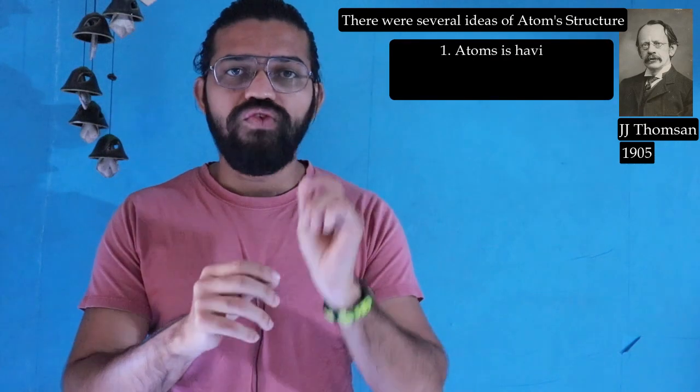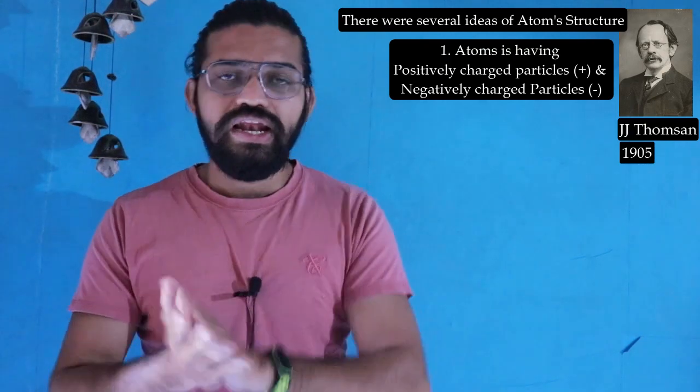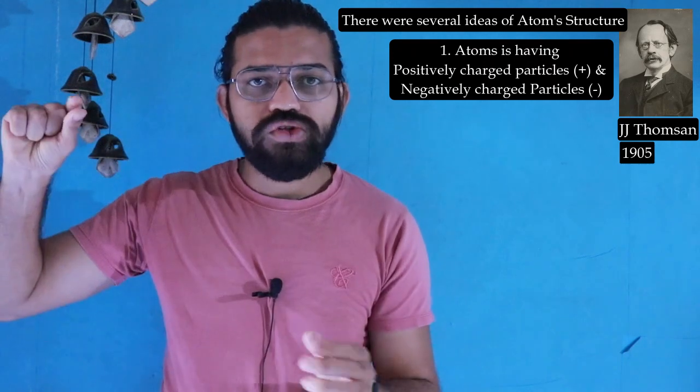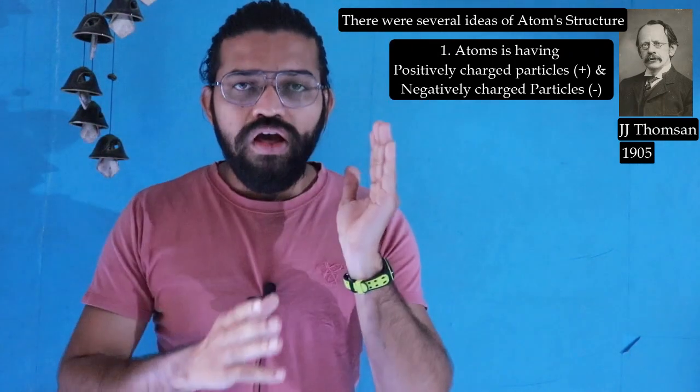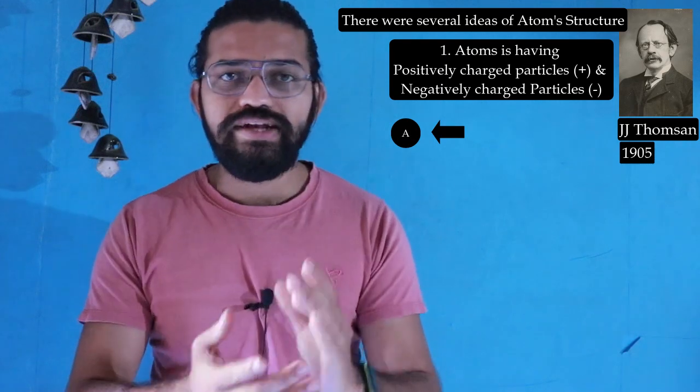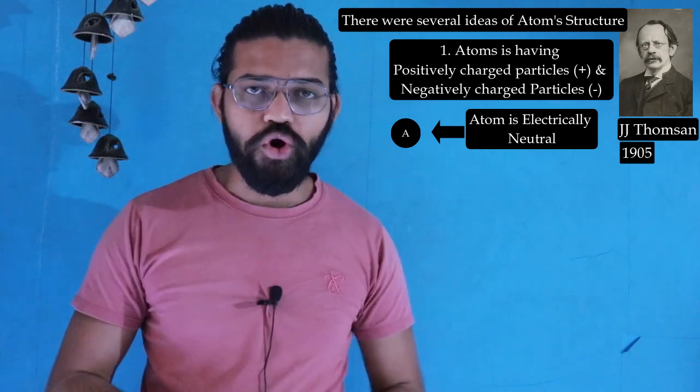Now let's talk about the proposed model by Mr. JJ Thomson, that is the plum pudding model. Around the 19th century, JJ Thomson proposed that atoms have both positively charged and negatively charged particles. The negatively charged particles are electrons, and there are also positively charged particles. These two charges nullify each other, and this is the reason the atom is electrically neutral. That is the first model proposed by JJ Thomson.